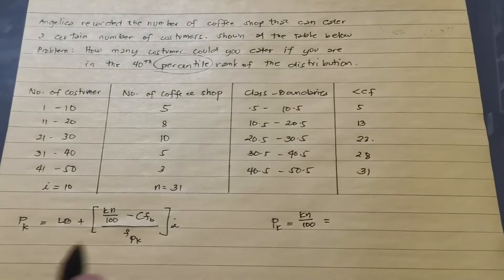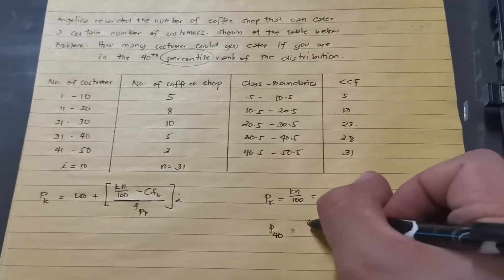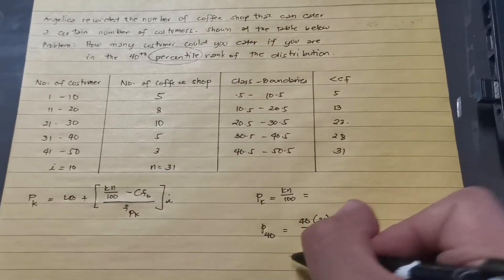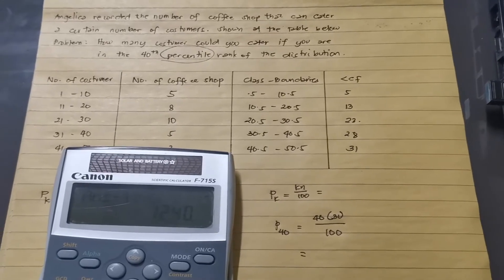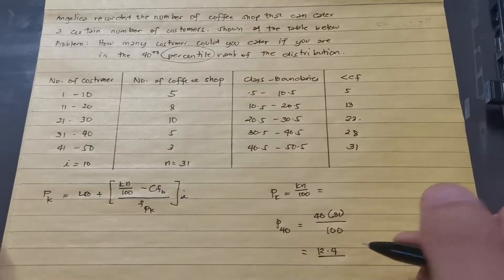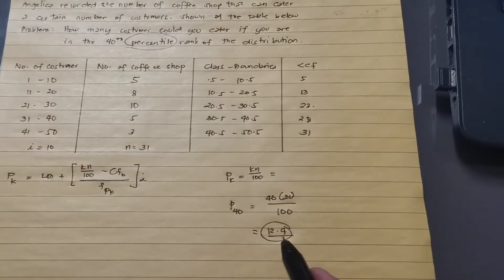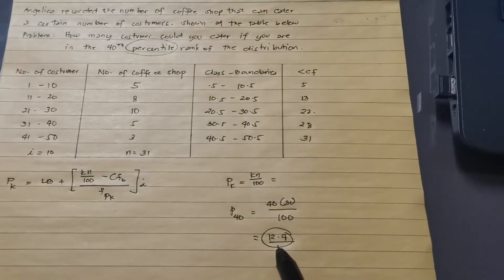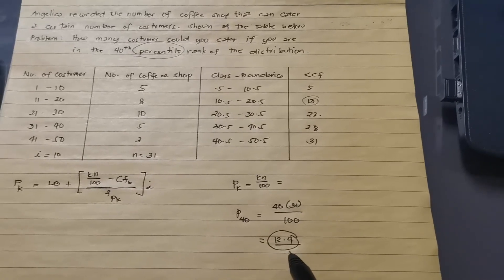We are looking for P sub 40, so K is 40. Our sample size N is 31, divided by 100. Using a calculator: 40 times 31 divided by 100 gives us 12.4. This value of 12.4 is not the 40th percentile value itself — it's the location. We use this to find the correct class interval by checking the cumulative frequency column.